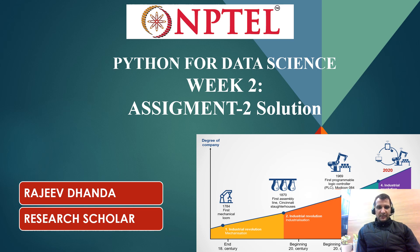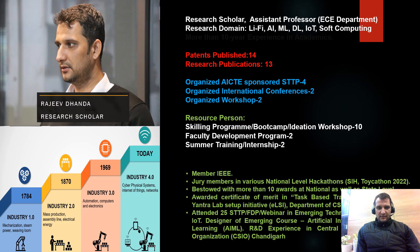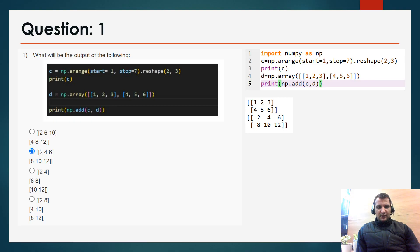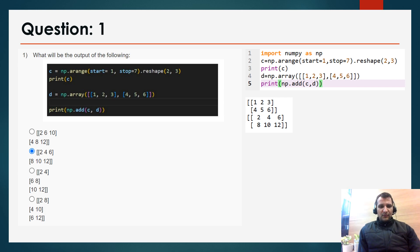Hello everyone, today I will discuss Assignment 2, Python for Data Science. The assignment is cross-validated with the help of Spyder IDE so that you can be sure that the accuracy of the assignment is 100 percent. Question 1: which will be the output of the following? When I executed this command in Spyder IDE, the correct option is B, as you can see on the right side.